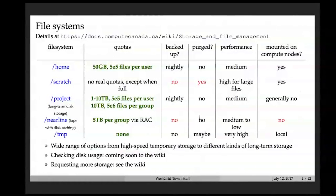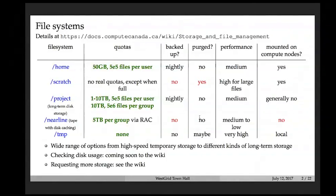When you log into Cedar, by default you'll find yourself in your home directory, which has a 50-gigabyte quota per user. All files in your home directory are backed up on a nightly basis. Home is primarily meant for storing important files, your codes, setup scripts, and so on.